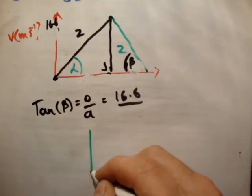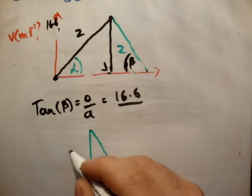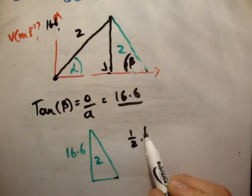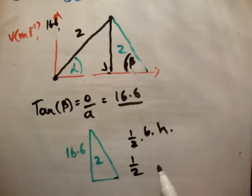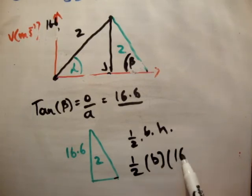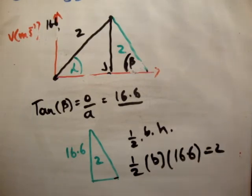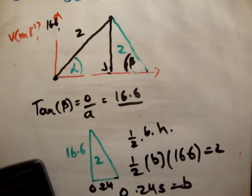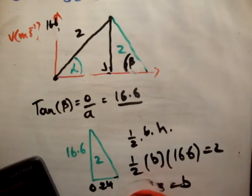So what if I just draw this triangle again? We know that this here is 16.6. We know the total area equals 2 meters. What's the area of a triangle? It's half the base by the height. So it's half times the base, which we don't know, times 16.6 equals 2. So 4 divided by 16.6 gives you the base of 0.24 seconds. So now I think we can use tan.